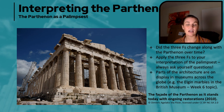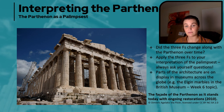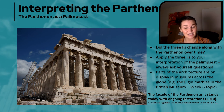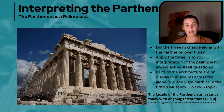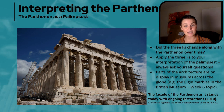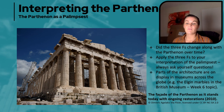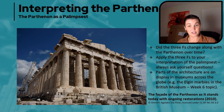Parts of the architecture are on display in museums across the globe. We're going to get into the issue of repatriation and specifically look at the Elgin Marbles, which were pieces of the pediment — that triangular bit at the top — and we're also going to look at tourism as well.